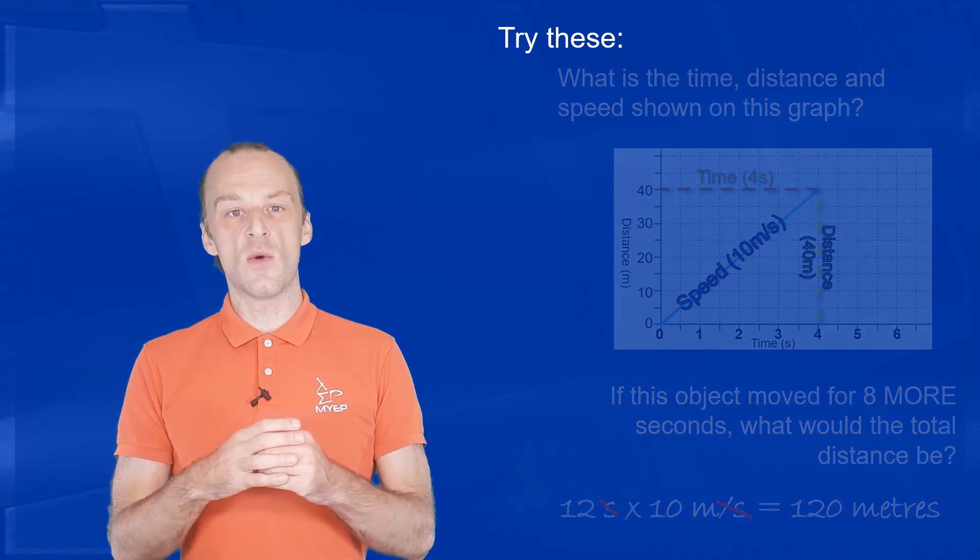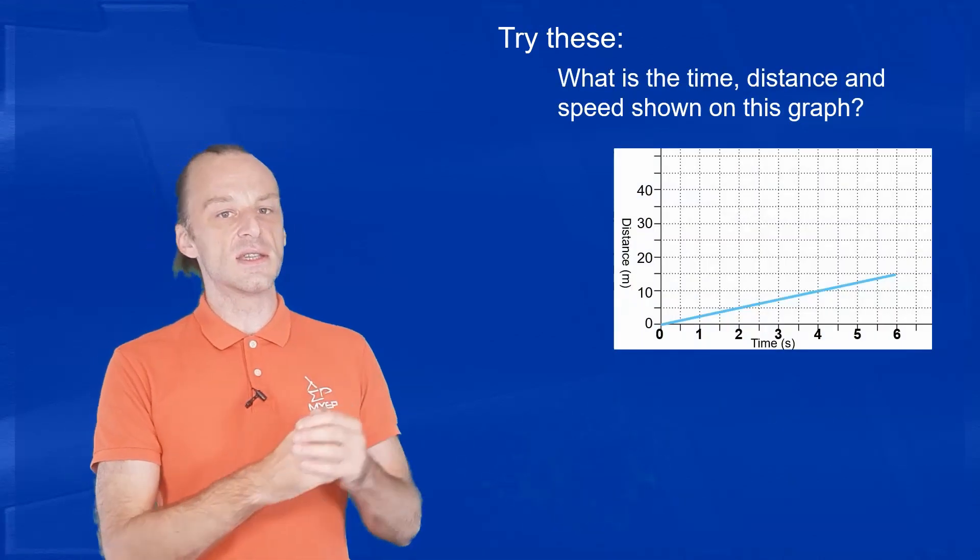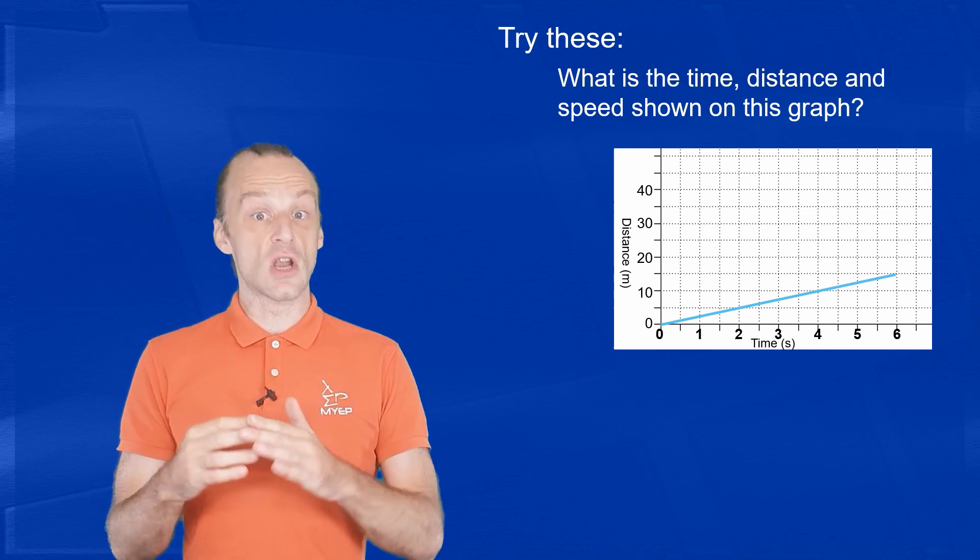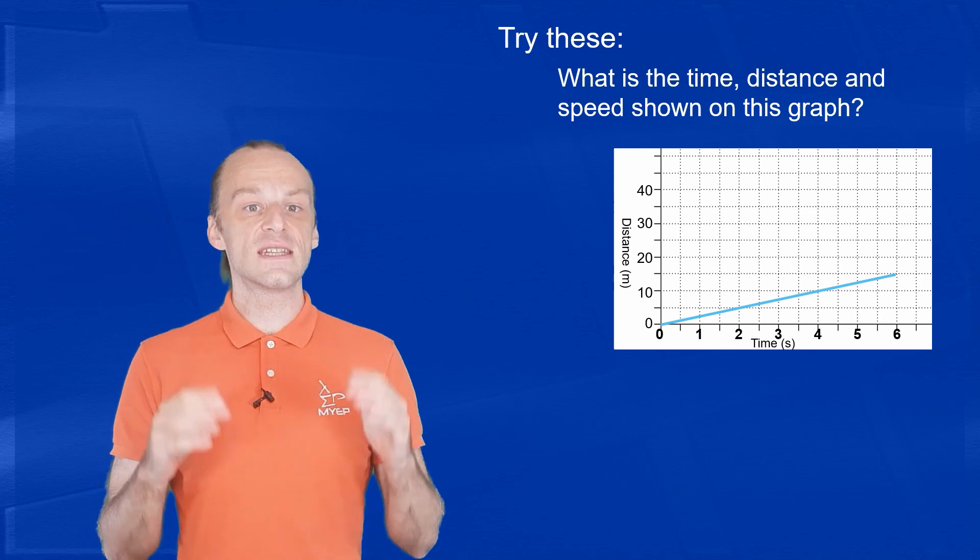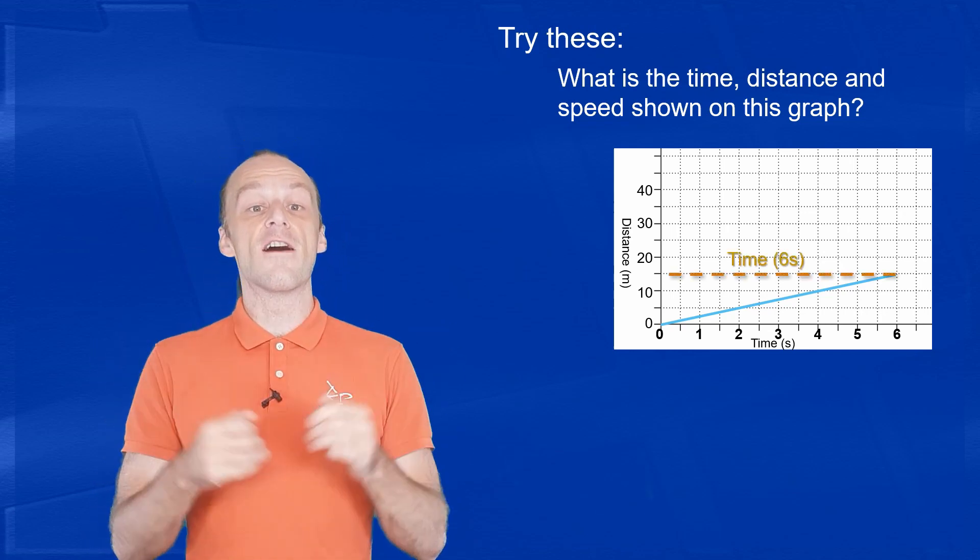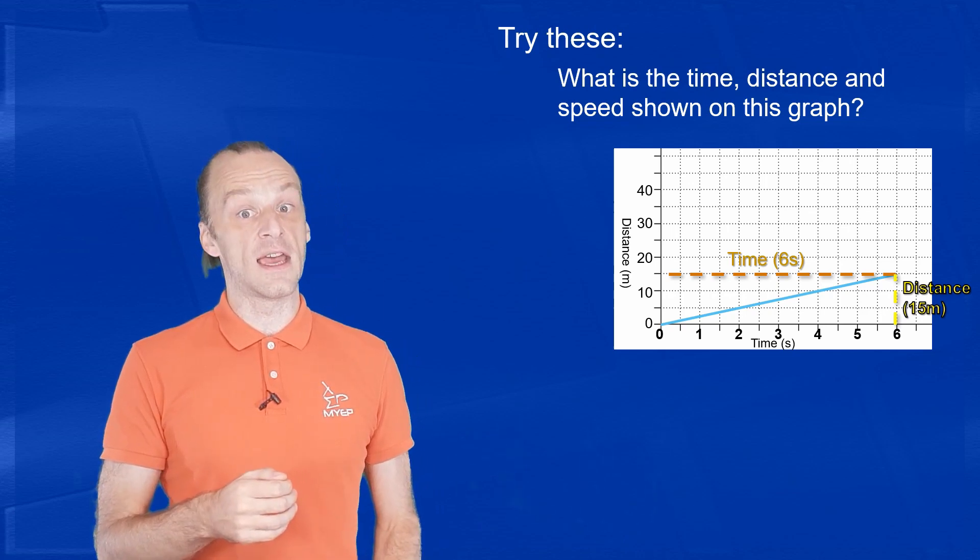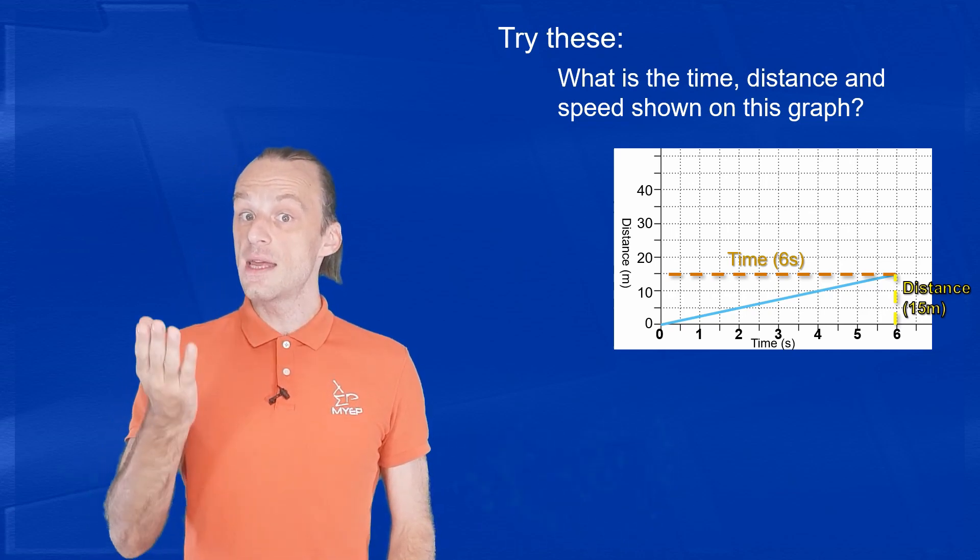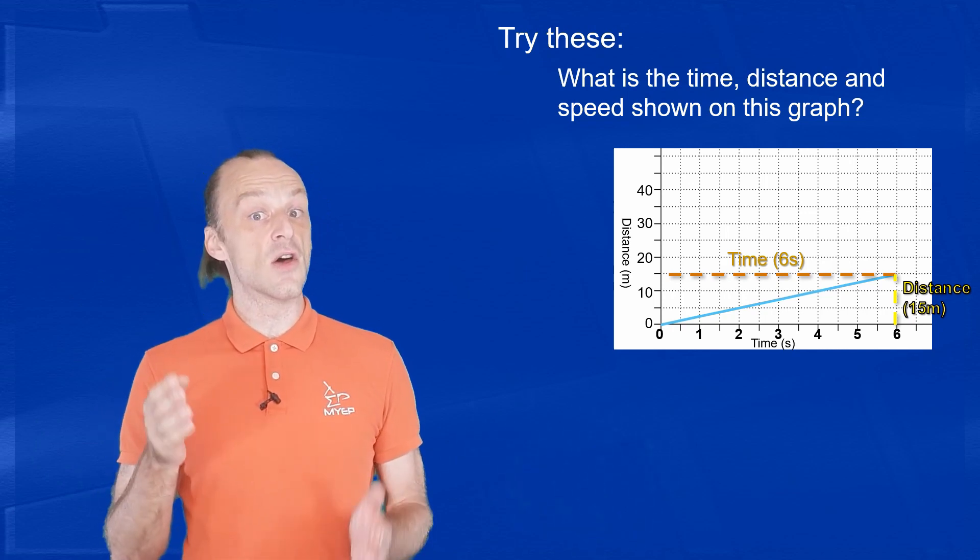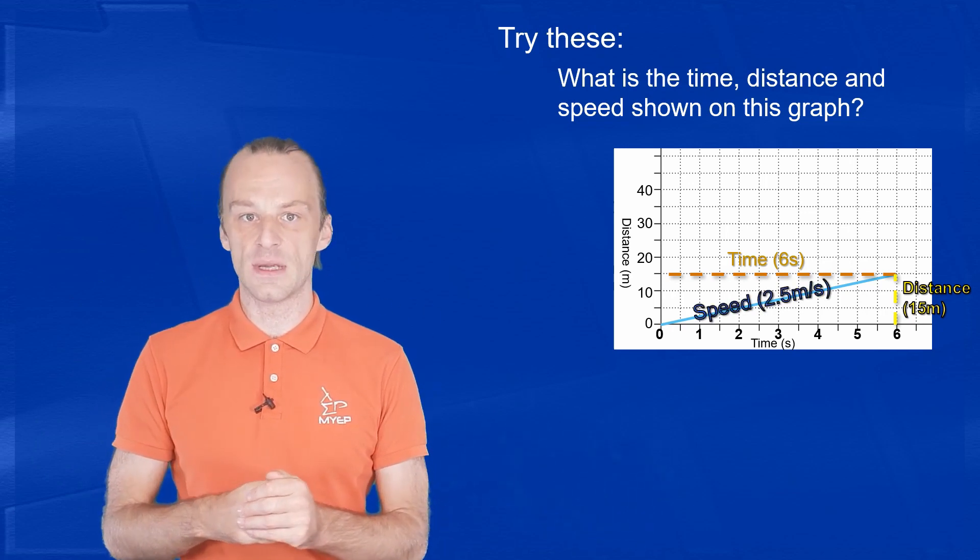Let's try another one. What is the time, distance, and speed that is shown on this graph? The graph goes along the x-axis for 6 seconds, and at the end of that 6 seconds, it has risen 15 meters on the y-axis. So we divide the 15 meter rise by the 6 second run, and that gives us a speed of 2.5 meters per second.